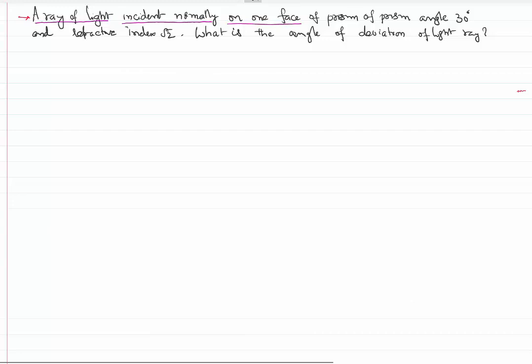on one face of a prism of prism angle 30 degrees. So it's very clear it's not a thin prism, it's a thick prism, and is made up of a material having a refractive index of root 2. What is the angle of deviation produced by the light ray? That's the question.